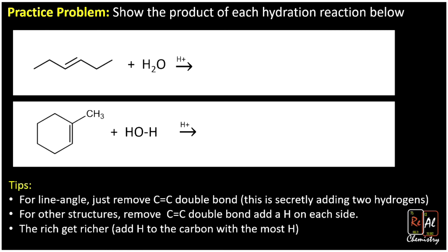Here we have an alkene where the carbon on the right has one hydrogen and the carbon on the left also has one — they both have three carbon-carbon bonds. So the hydrogen and the OH can add to either one; it doesn't matter. In some cases there's no preferred product, so you can draw OH on either side. In this case, even if you draw it on the other carbon it's actually the same exact molecule flipped 180 degrees. When Markovnikov's rule doesn't tell you which is preferred, you get a mixture of those products.